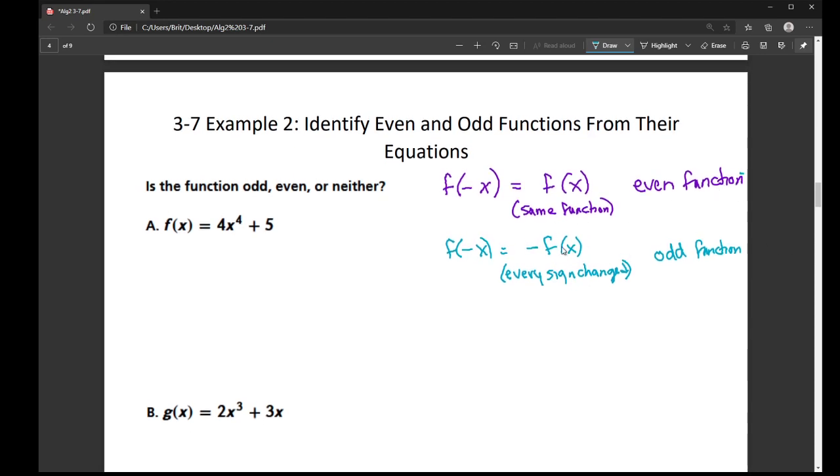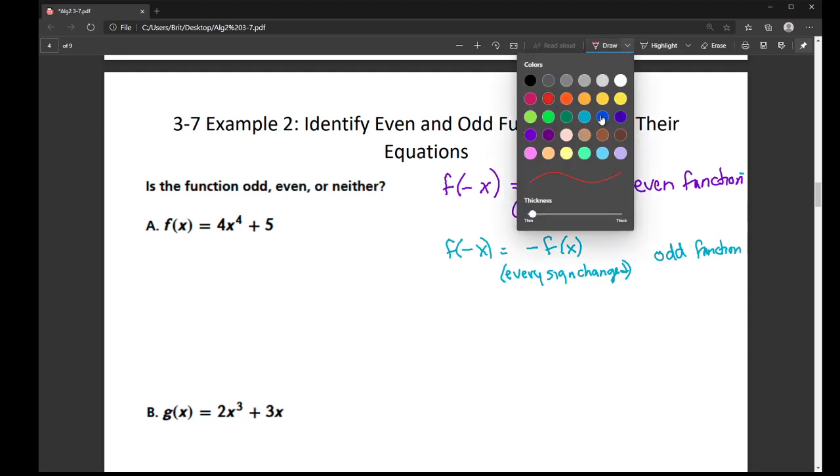Now understand, this is an all or nothing thing. I can't have just one sign change. That would be neither even nor odd. It has to be every single sign changes to be odd, or none of the signs change for it to be even. So that's kind of what we're looking for. So let's give it a go.